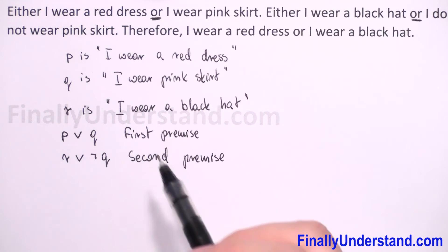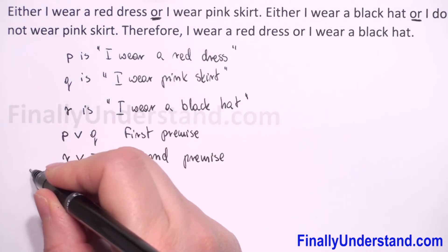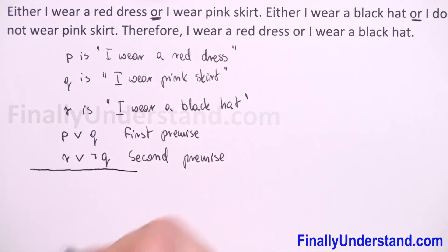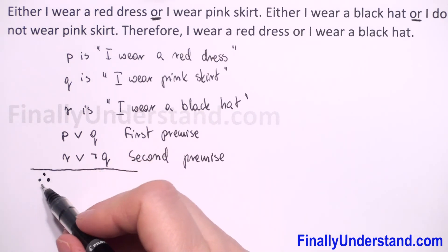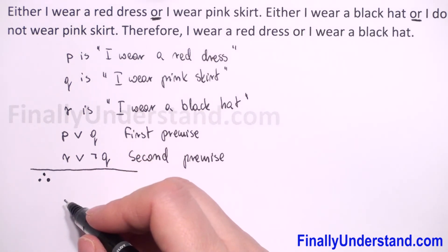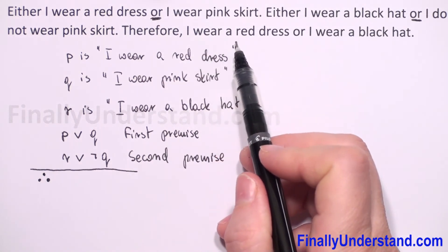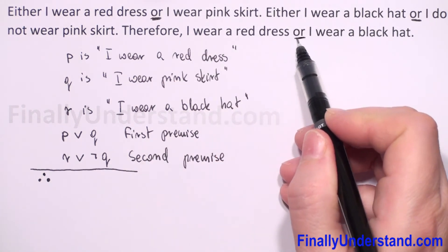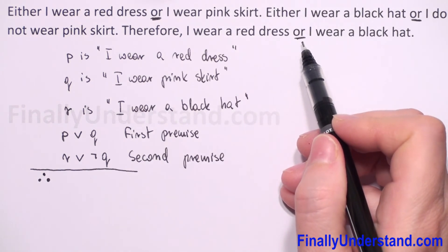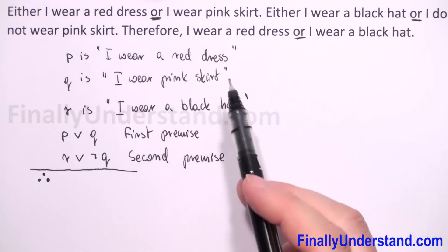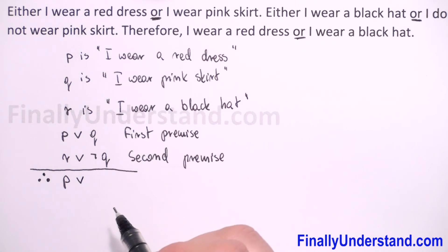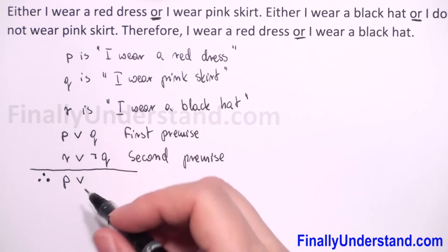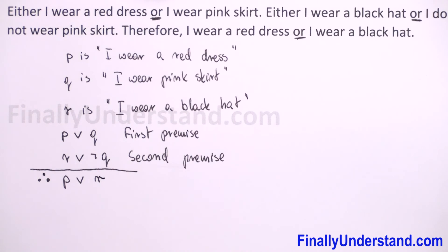We underline our premises. The word 'therefore' is represented by three dots. The conclusion is: I wear a red dress or I wear a black hat, which gives us p or r. So our conclusion is p or r.